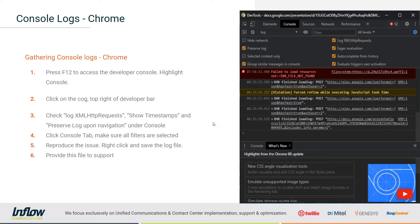Once your filters are all selected, you need to keep this console open and reproduce your issue. For example, if an agent is having one-way audio on calls and you can reproduce it, have them place a test call — that test call will get logged in the console log. Once you've reproduced the issue, just right-click anywhere in the body of the tab — where it shows things like 'failed to load resource' or 'XHR finish loading' — and save the log file. Then provide this file to support.